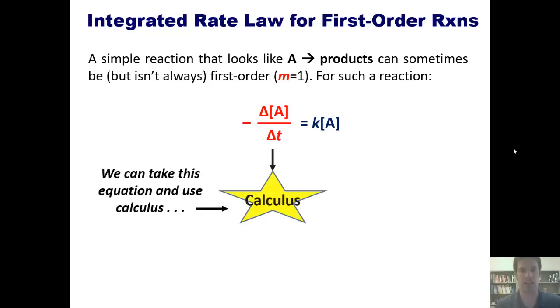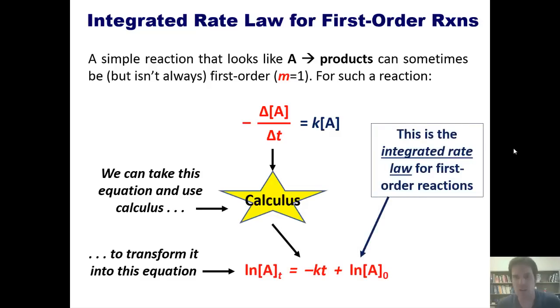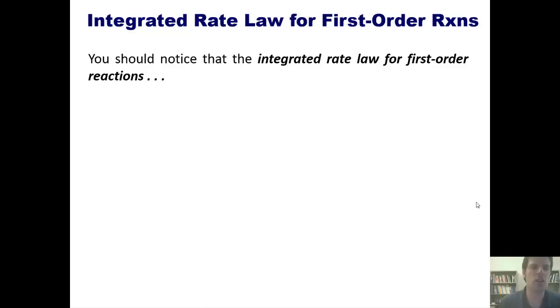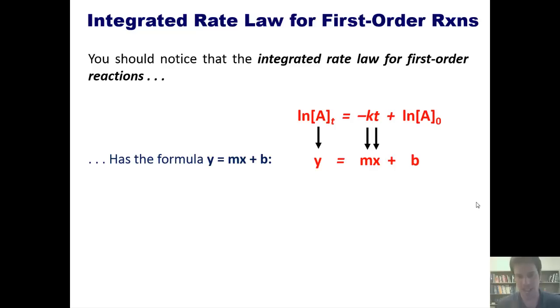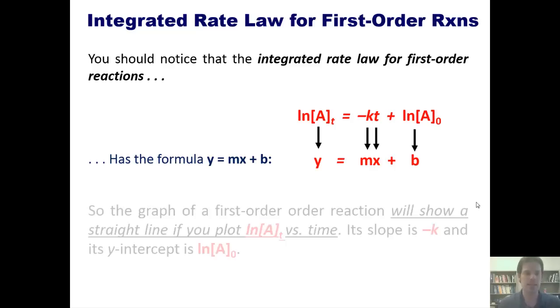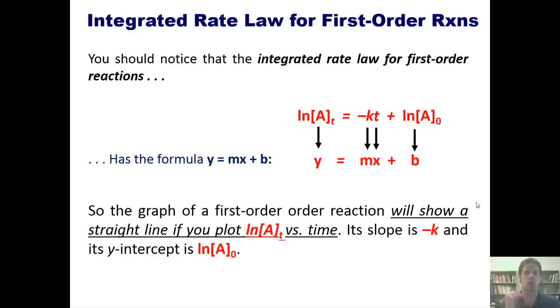This new equation down here is called the integrated rate law for first order reactions. And yes, for students who take this from me in the class, I will give this equation to you on the exam. So you should notice that the integrated rate law for first order reactions has a formula of Y equals MX plus B. This thing corresponds to Y, the negative K corresponds to M, a slope, T corresponds to X, and this LN of A thing corresponds to B. So the graph of a first order reaction will show a straight line if you're plotting LN of A sub T versus time. Its slope is negative K, and its Y-intercept is the LN of A sub 0.